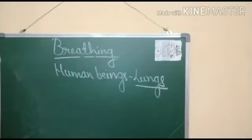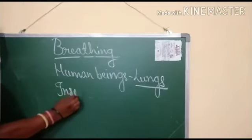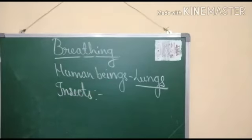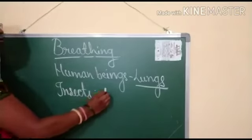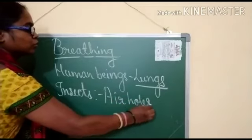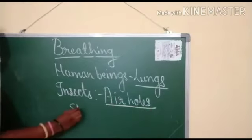The last animal I want to tell you about is the small animal called insects. Insects are small animals with six legs. They breathe through special tiny holes present on the body called air holes, also known as spiracles. These holes present all over the body of an insect are called spiracles.